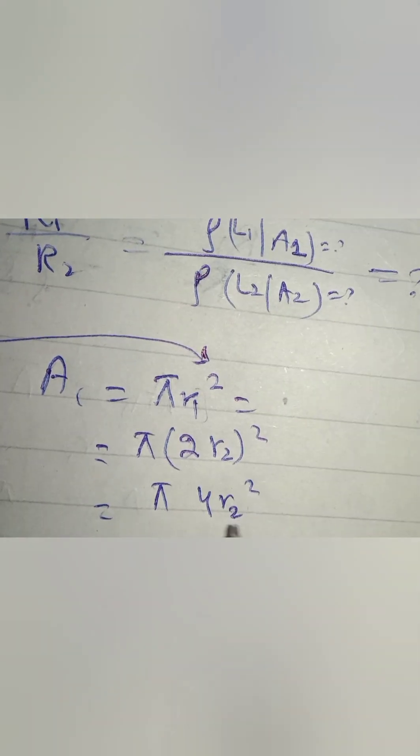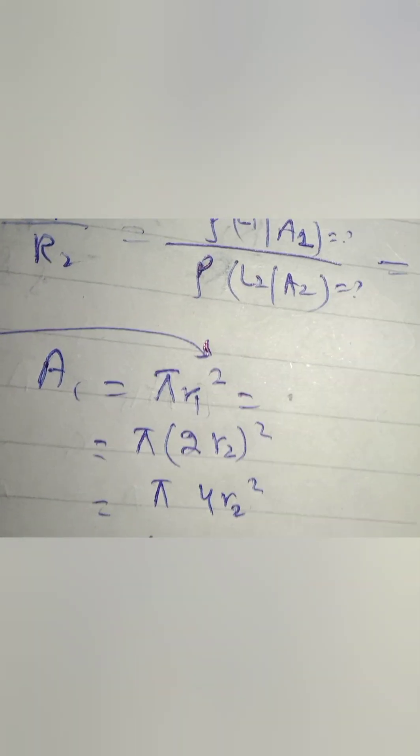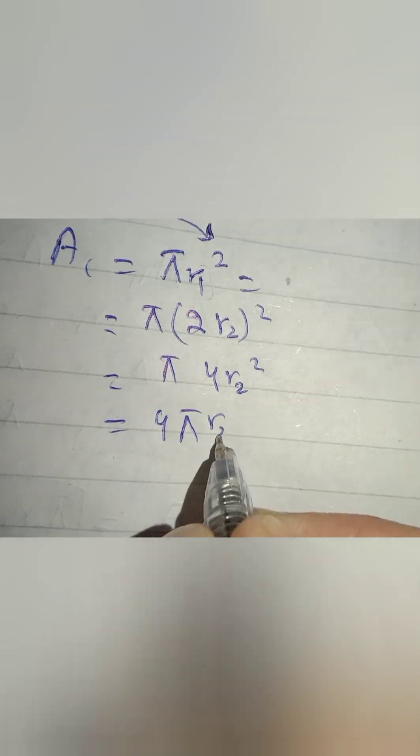We know area A1 is π r1 squared, and we know the value of r1 is 2r2. So we will put here the value of r2 because we are converting A1 in terms of r2. What we get is A1 equals 4π r2 squared.